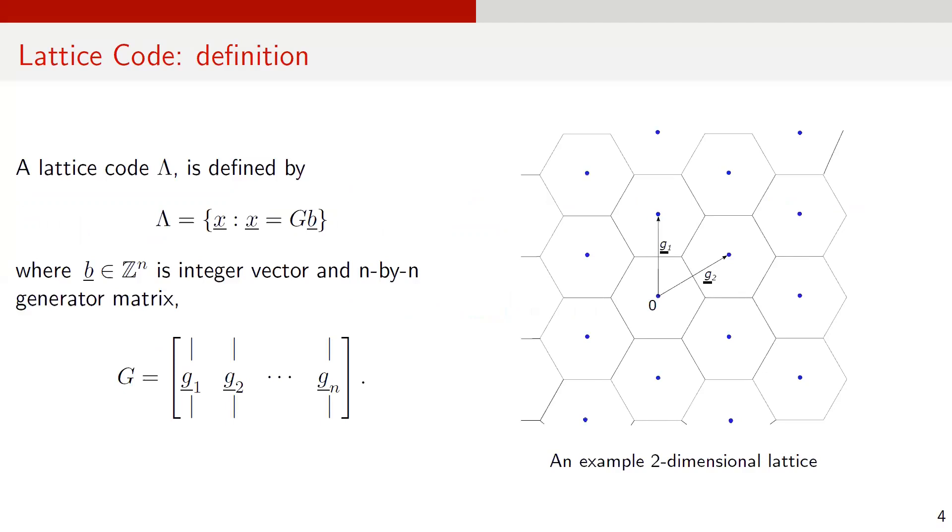A lattice code is generally denoted by Greek letter lambda. A lattice code lambda is the set of all lattice points x such that x equals g times b, where b is an integer vector in Z to the n. And g is generator matrix, where the basis vectors g sub 1, g sub 2, up to g sub n make the columns of this matrix G. Here is an example of a two-dimensional lattice which has two basis vectors G sub 1 and G sub 2.